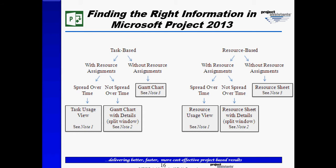When we look at task-based information, we have the opportunity to determine whether we want to see tasks with assignment information or without assignment information. If we choose with assignment, we're going to see information spread over time or maybe not spread over time. As we ask these questions and provide the answers, it will tell us which of these views we want to go look at. Once we choose a view, there'll be notes to tell us how to use that view.